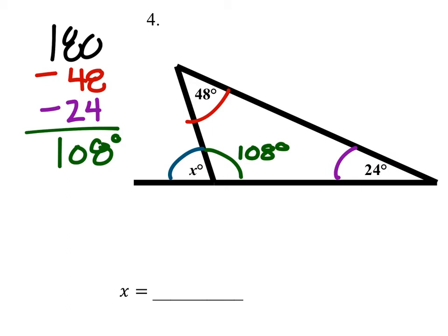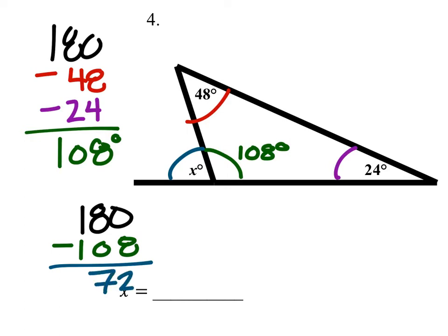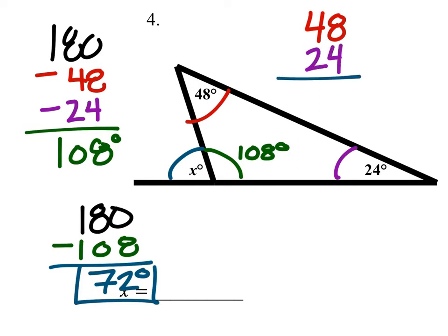If we combine the green angle with X degrees, it should be 180 degrees as well. So we're going to take 180 and subtract the 108, which gives us 72 degrees. But that was just one method. The other method — using that last bullet point about exterior angles — is that if we took the red angle of 48 degrees and added it to the 24 degrees, it equals this exterior angle X, which also is 72 degrees. You can find the green angle and then subtract from 180, or you can add the two non-adjacent angles directly.